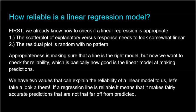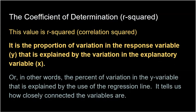There are two different values that explain reliability to us. The first is called the coefficient of determination, or R-squared. All the coefficient of determination is, is your correlation R squared — just take R and square it. When you square it, it becomes positive, even if R is negative. R-squared tells you the proportion of variation in the response variable that is explained by the variation in the explanatory variable.